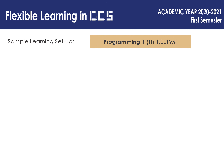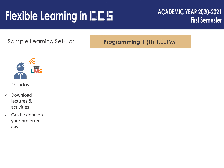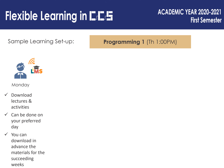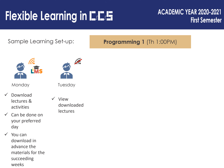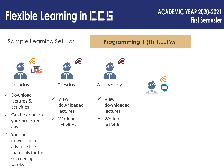Sample learning setup for Programming 1 with a scheduled Google Meet every Thursday at 1 pm. On Monday, the student logs on to his LMS account to download lectures and activities. This can be done on your preferred day, and you can also download in advance the materials for succeeding weeks. On Tuesday, the student does not need to go online — he can view offline the downloaded lectures and work on downloaded activities. On Wednesday, the student can continue viewing lectures or working on activities.